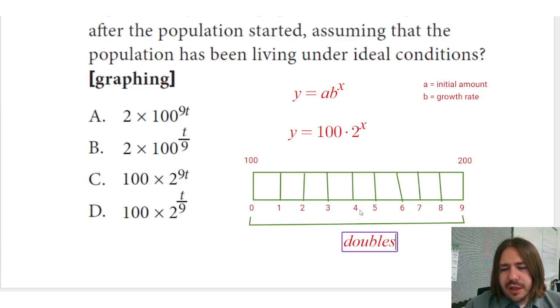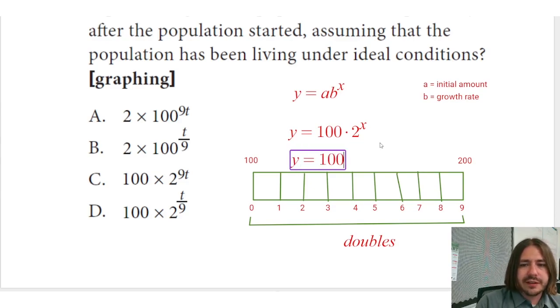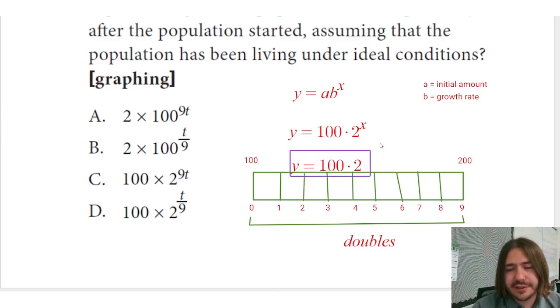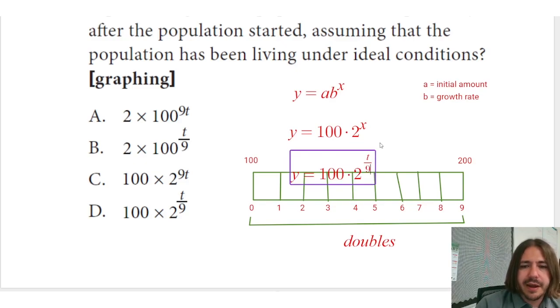So in order for us to keep track of each individual year, we need to notice how we broke this up into nine pieces, one for each year. From zero to year one, we don't do a full doubling—you only do one-ninth of the double. And then after year two, there's two-ninths of the doubling, three-ninths, and all the way until we get a full doubling. So in order for us to get that exponent—since it doubles not every year but every nine years—we're going to say it's t divided by 9.